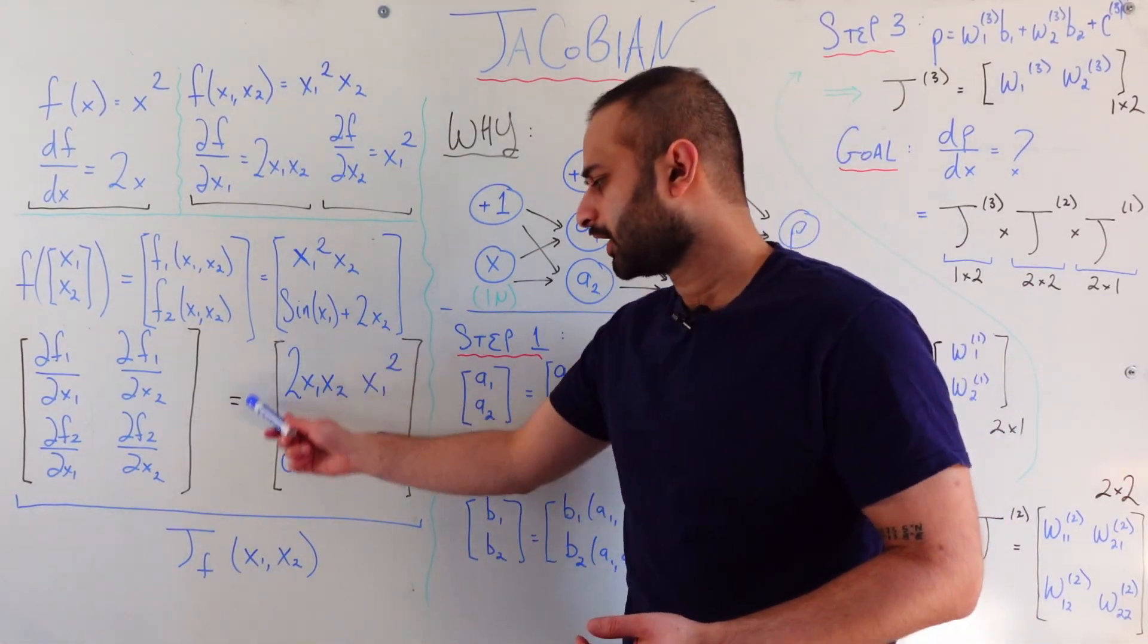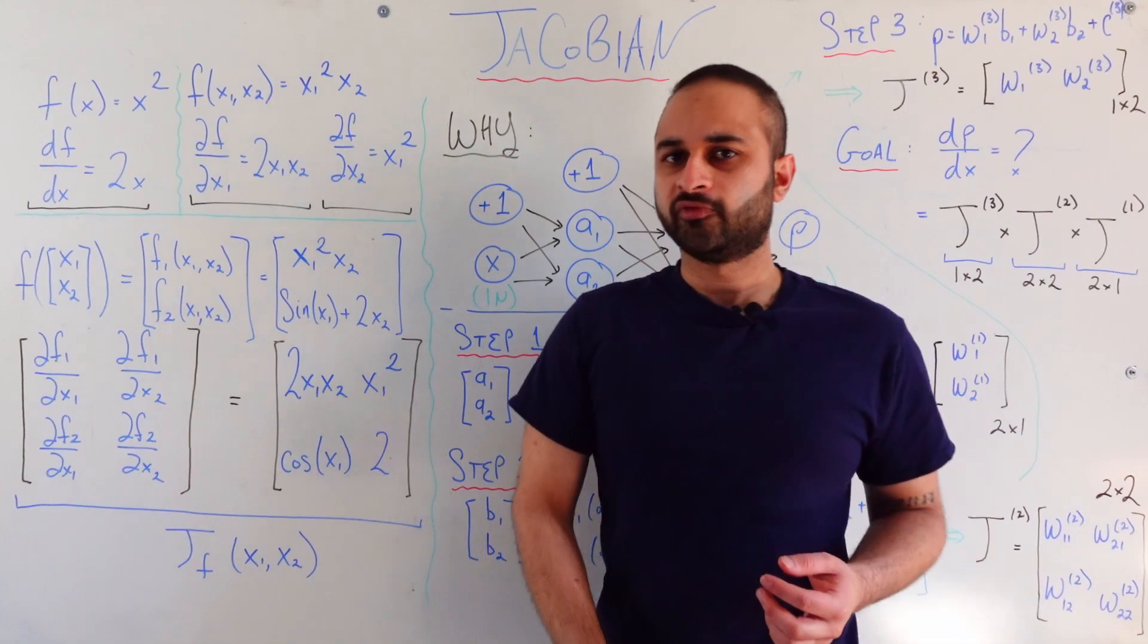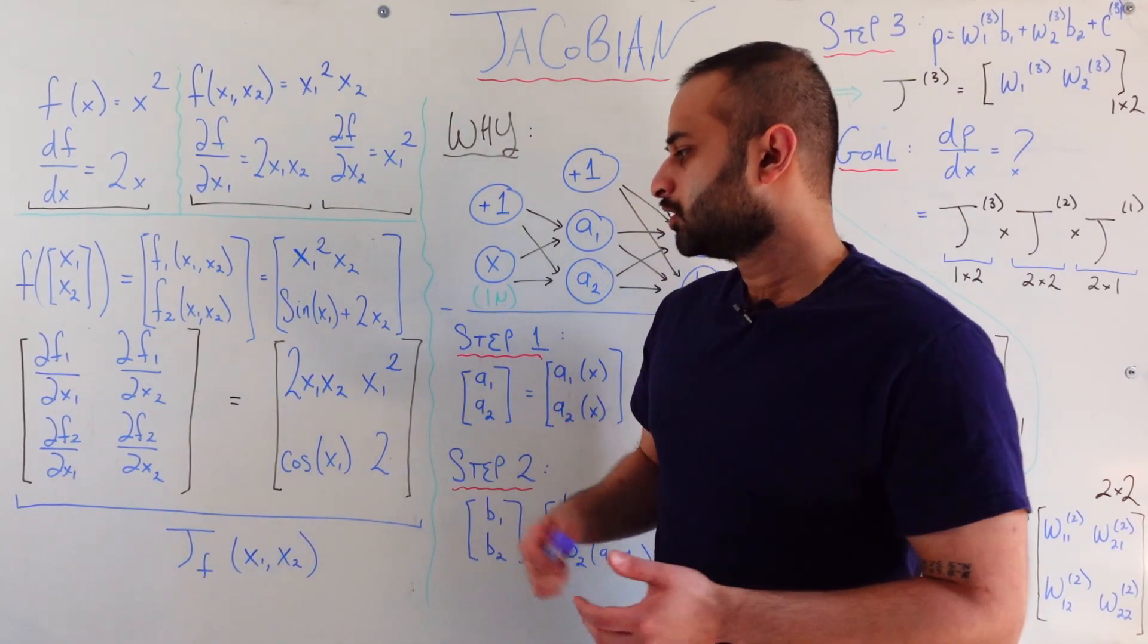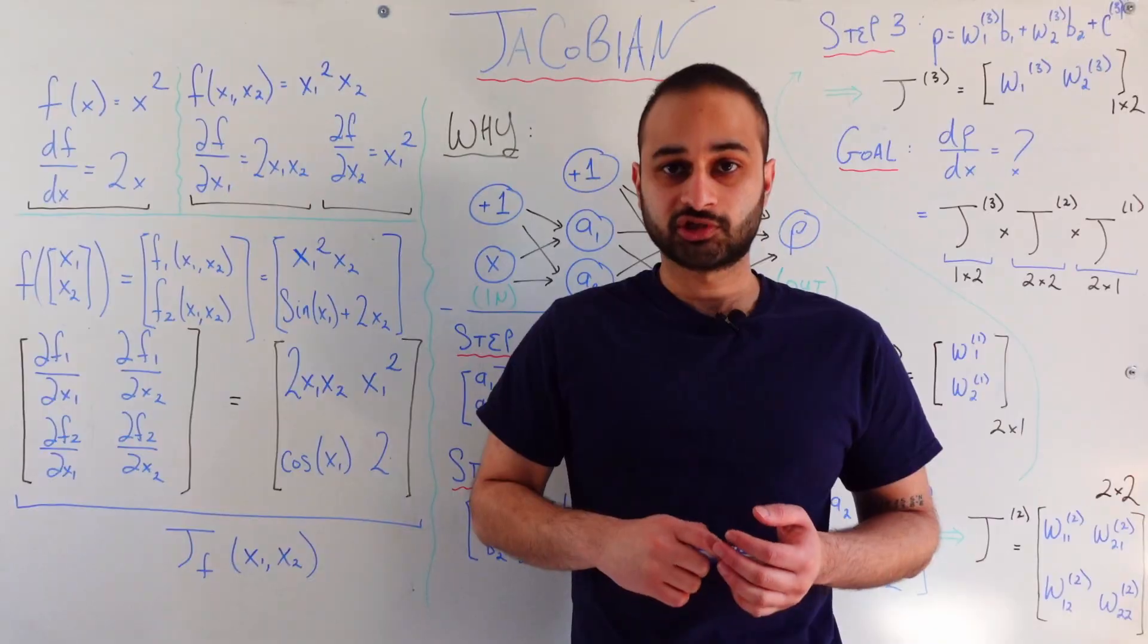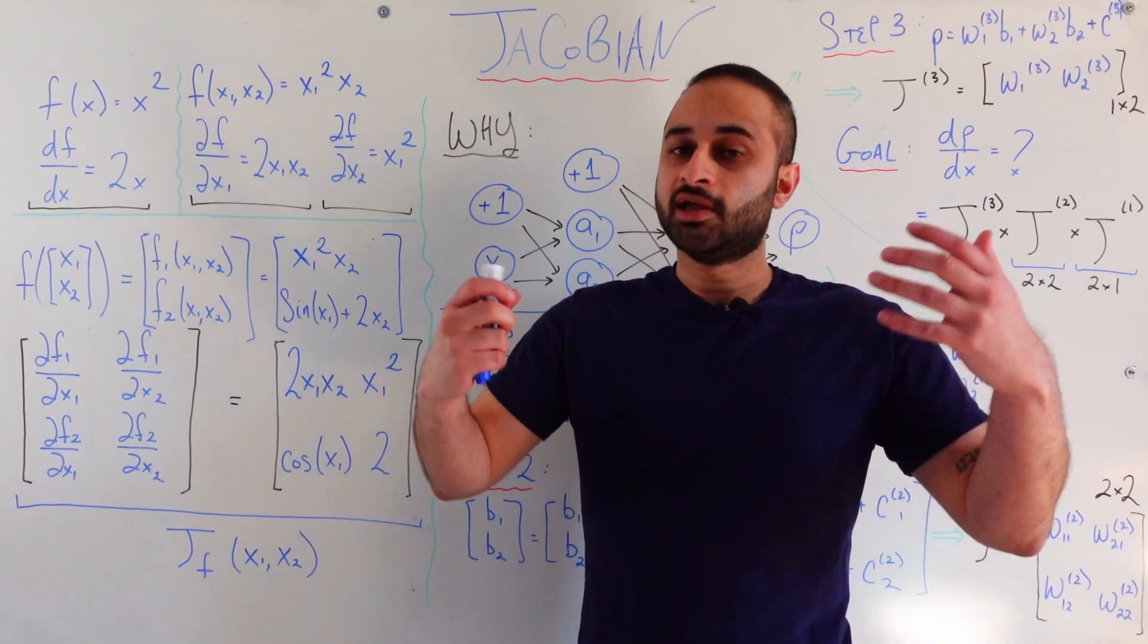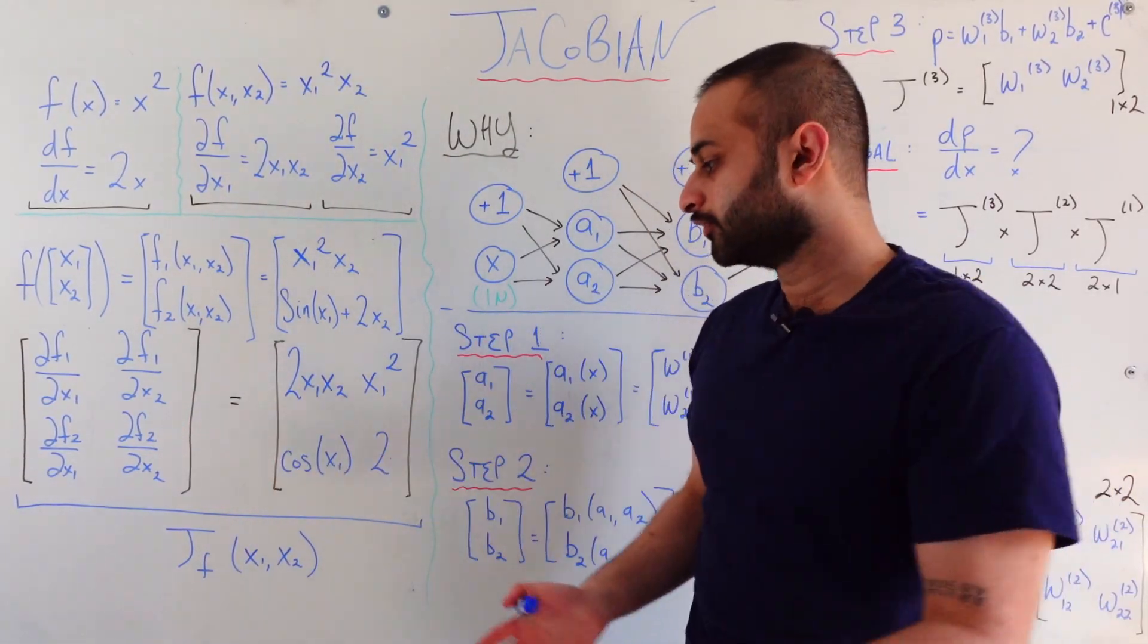And we can just work them all out and it looks like this. So hopefully I remember my calculus well enough to have that correct. But we have this 2 by 2 matrix which collects all the possible derivatives and this 2 by 2 matrix is what's called the Jacobian.